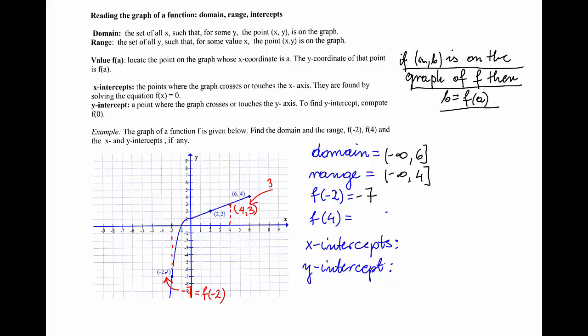By definition, the y-coordinate of that point, 3, is the value of the function at the x-coordinate 4. So f(4) = 3.